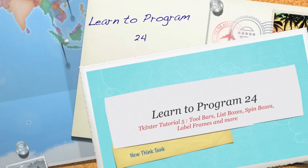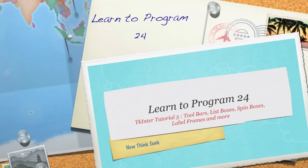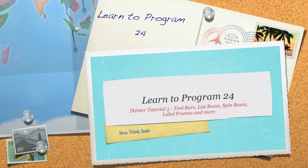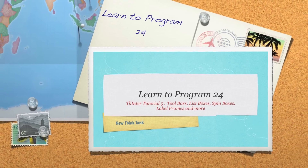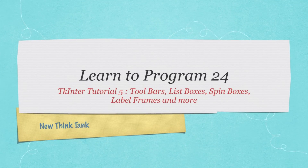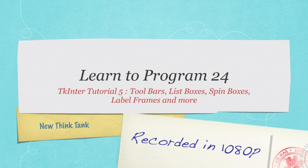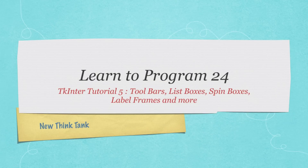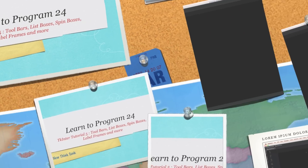Hello Internet, and welcome to part 24 of my Learn to Program series and part 5 of my TKinter tutorial. Today we're going to start wrapping up TKinter by covering toolbars, list boxes, spin boxes, label frames, and a whole bunch more. In the next part of the tutorial, maybe I'll create a paint application or something with Canvas. All of the code, as well as a transcript of this video, is available in the description underneath the video, so let's get into it.